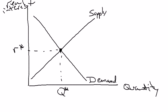Now for the equilibrium real interest rate and equilibrium quantity of loanable funds. What makes equilibrium important is not that the curves intersect. And technically, it's not that supply equals demand — because technically, it's quantity demanded equal quantity supplied.